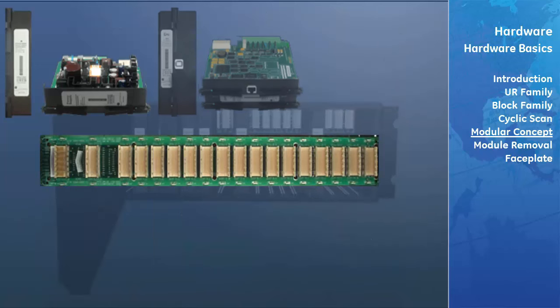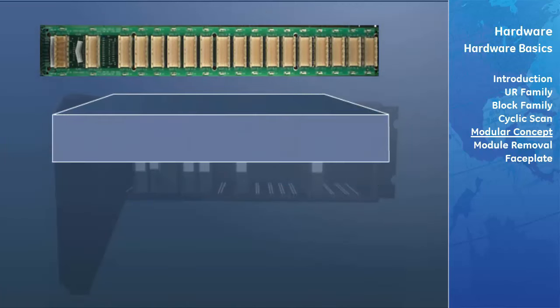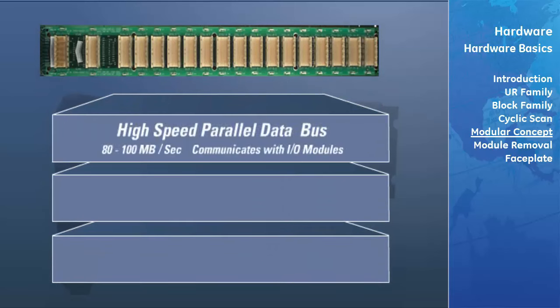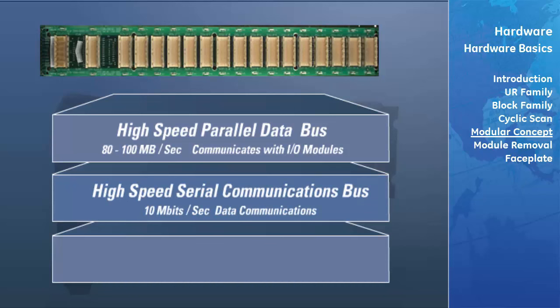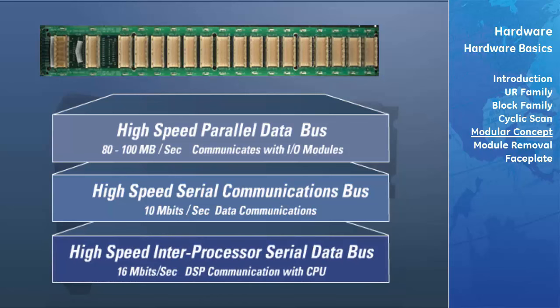The UR backplane consists of three high-speed data buses: the high-speed parallel data bus, which runs at 80 to 100 megabytes per second, allowing the CPU to communicate with the I/O modules; the high-speed serial communications bus, which runs at up to 10 megabits per second for data communications; and the high-speed inter-processor serial data bus, which runs at 16 megabits per second and allows the DSPs, or digital signal processors (sometimes referred to as CT/VT modules), a separate bus to communicate to the CPU.